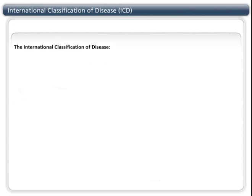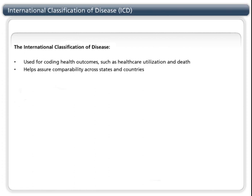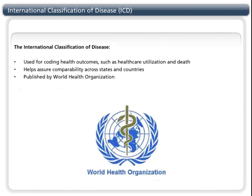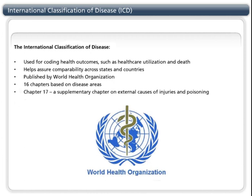The International Classification of Disease, or ICD, is relevant here because cause of death coding uses ICD. The main purpose of ICD coding is to enhance comparability across states and countries with respect to health outcomes. The World Health Organization publishes 16 chapters according to specified disease areas, and a 17th chapter relating to external causes of injuries and poisonings. Periodically it is revised, with the most recent revision being ICD-10. While we use this revision for classifying cause of death, hospitalization and emergency department diagnoses are still classified using the 9th revision.